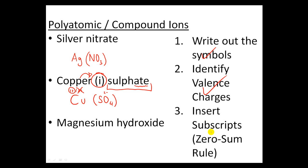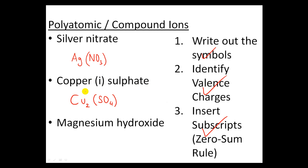Next step: insert subscripts if necessary to follow the zero-sum rule. Right now I have 1+ and 2-; they do not sum to zero. So I need more positives to neutralize the 2-. I need 2 coppers altogether: 2 positives and 2 negatives do add up to zero. The zero-sum rule is fulfilled and this compound is stable. The final answer is Cu2(SO4).